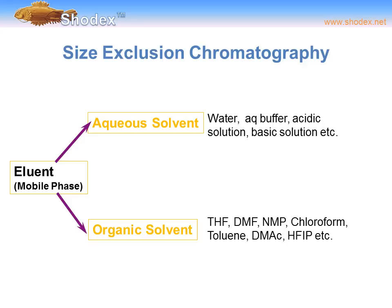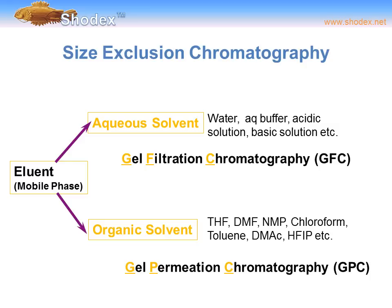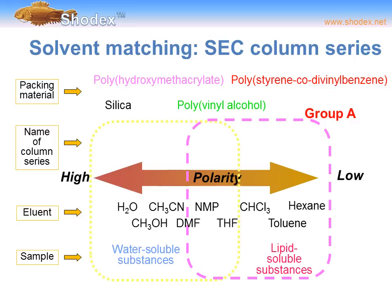In size exclusion chromatography, we can use an aqueous-based solvent or an organic-based solvent as the eluent. Examples of aqueous-based solvents include water, buffered water, or acidic or basic solutions. Examples of organic solvents include tetrahydrofuran, dimethylformamide, NMP, chloroform, and toluene. Strictly speaking, aqueous-based SEC is referred to as gel filtration chromatography (GFC), whereas organic-based SEC is referred to as gel permeation chromatography (GPC). These are traditional definitions.